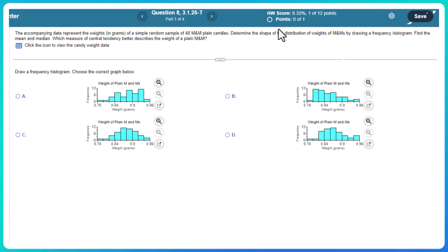The accompanying data represents the weights in grams of a simple random sample of 48 M&M plain candies. Determine the shape of the distribution of weights of M&Ms by drawing a frequency histogram. Find the mean and median, and which measure of central tendency better describes the weight of plain M&Ms.